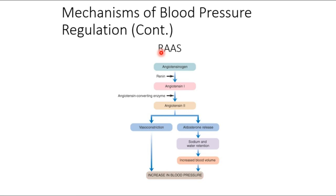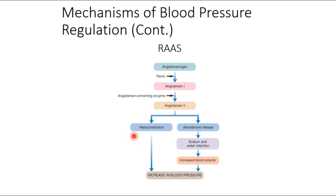Angiotensin converting enzyme (ACE) comes from the lungs — all over the place, but especially the lungs. In the presence of renin, angiotensinogen converts to angiotensin 1. With ACE present, angiotensin 1 converts to angiotensin 2, which causes vasoconstriction and, most significantly, releases aldosterone — and even behavioral effects like drinking more water.